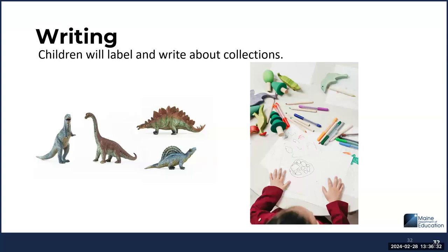Children will make collections and label and write about them, with connections to Puddle Pail. Children will create, label, and write about their collections. Have students describe the collections, ask students about the collections, and have conversations about how the collections are similar to those in the story or to a museum, and how they are different.